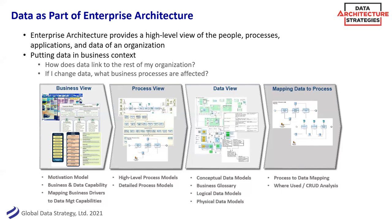The pure data view: as with the Zachman framework, there are different layers of data — physical data models, databases — but I like to also start with a conceptual data model, that business view. Even a business glossary or taxonomy is a business view of data. And then how do you map them together? For example, how do we map data to process using something like a CRUD analysis — we'll talk about that a little bit later. Hopefully that gives an overview of how some of these things fit together.